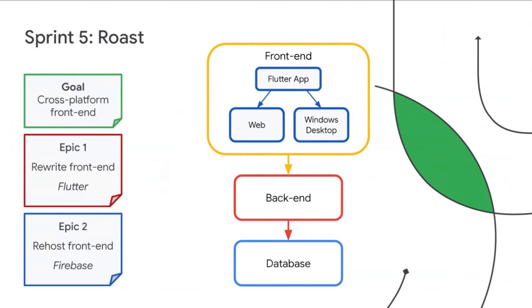First, we built for web, and second, we used that same Dart code to then build the application and run on Windows devices. In the future, this now allows us to maybe build for iOS or Android. While our Windows applications would be used on physical devices in-store, we were hosting our web front-end on Firebase Hosting — just so we could deliver our content fast and deploy our web app with just one single command.